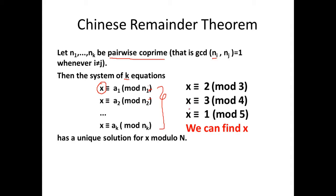Let's take an example. I have x is congruent to 2 mod 3 — when I divide x by 3, I get a remainder of 2. When I divide x by 4, I get a remainder of 3. When I divide x by 5, I get a remainder of 1. So x is a unique number that satisfies all these equations. We only need to check that n1, n2, n3 are pairwise co-prime: 3 is co-prime with 4, 4 is co-prime with 5, and 3 is co-prime with 5 — any pair has gcd of 1. So there is a unique solution for x.